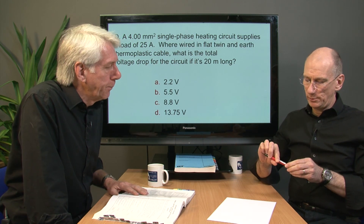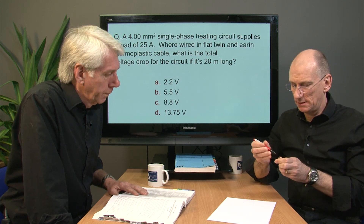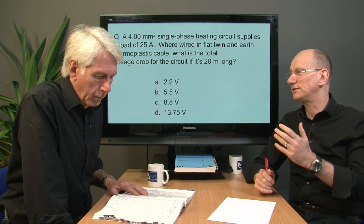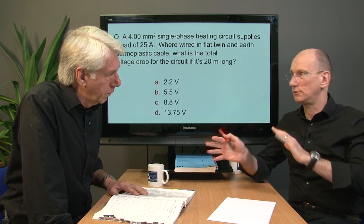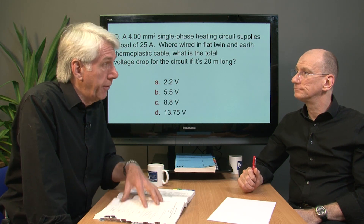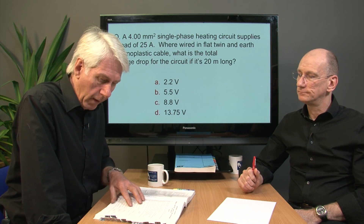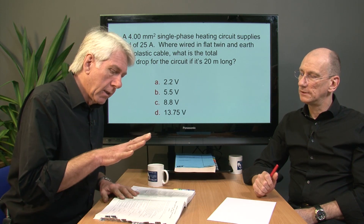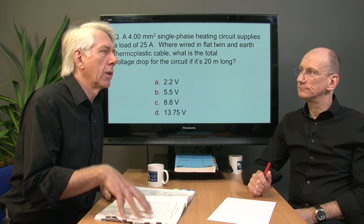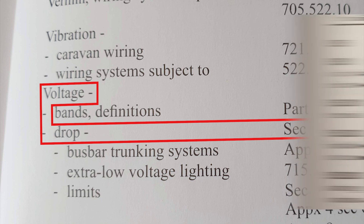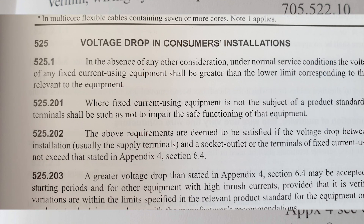So where do we find that? Well we need to look in the back of the book. It contains an appendix that covers all cables for current carrying capacity and voltage drop. It covers single phase cables, three phase cables, armoured, single, and that is in Appendix 4. Appendix 4 is a very useful appendix to become familiar with. If you're working with your book have a look at it now. The default position is to go to the index, which will direct you to section 525, which covers voltage drop, which mainly directs you back to Appendix 4, section 6.